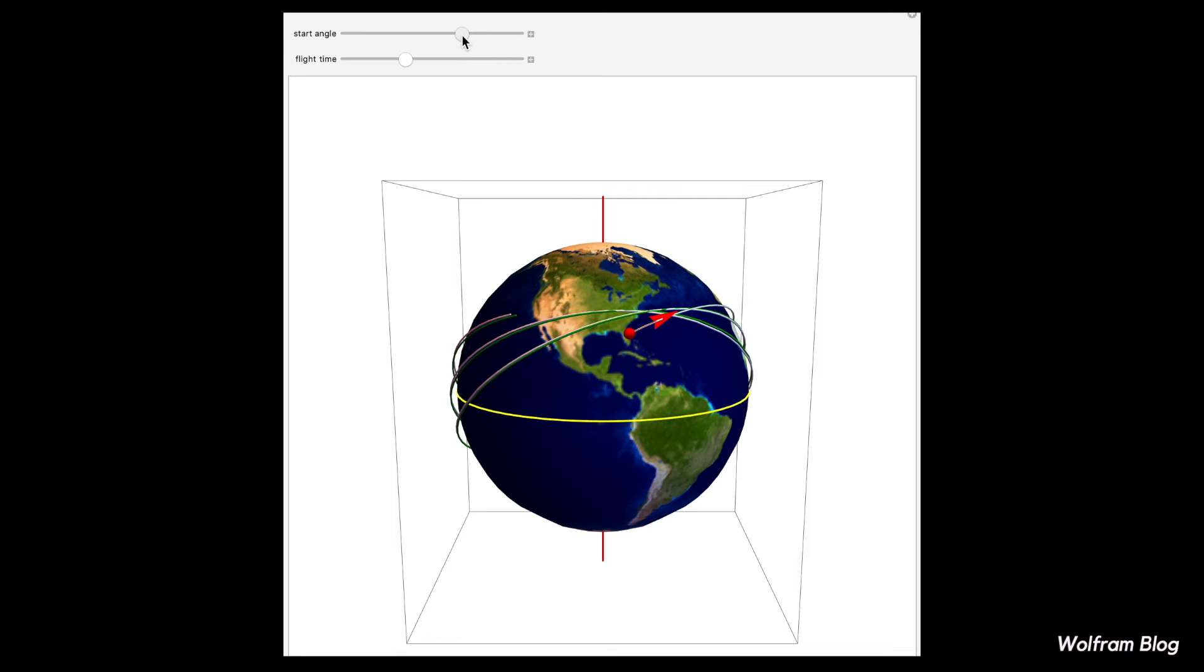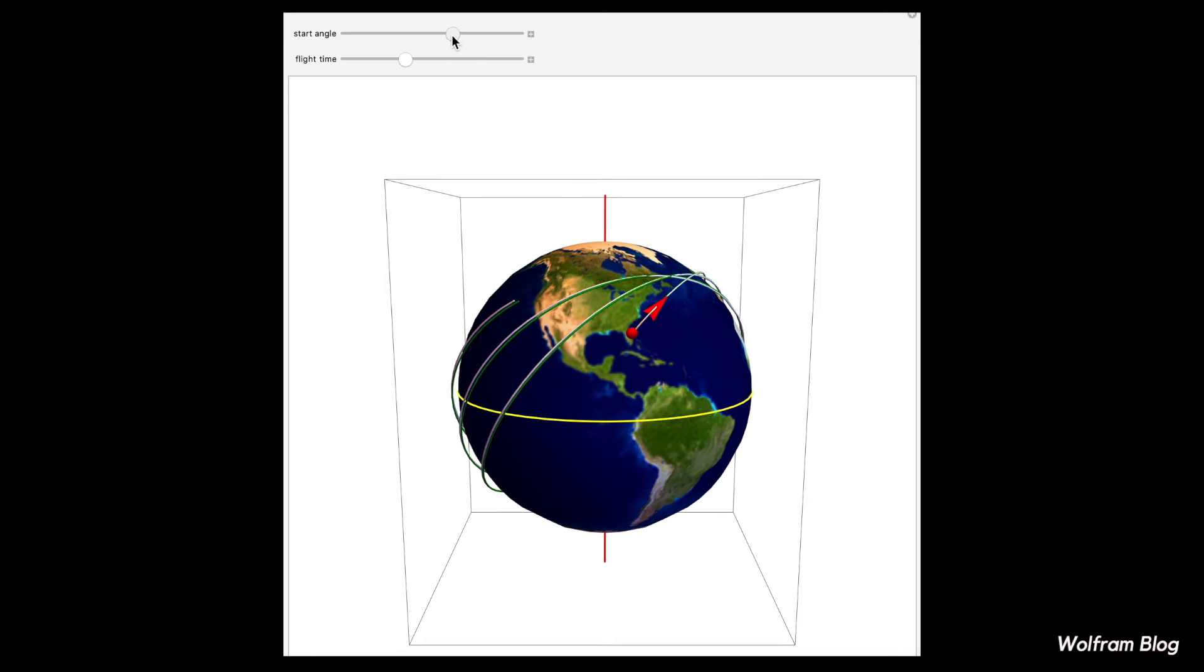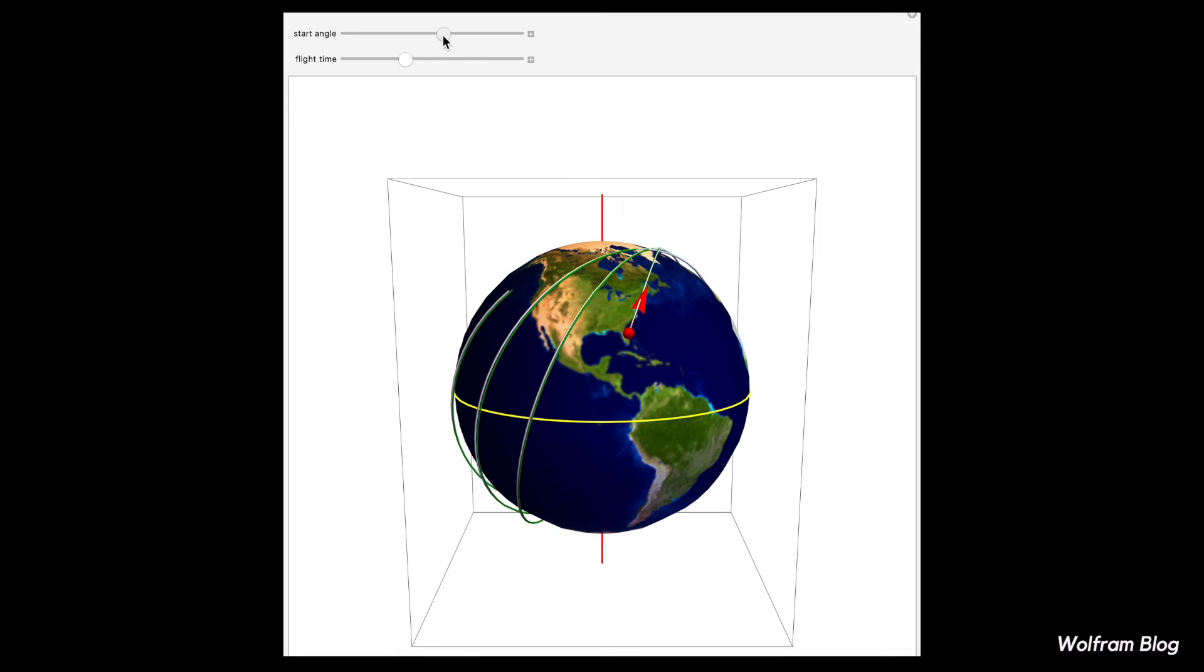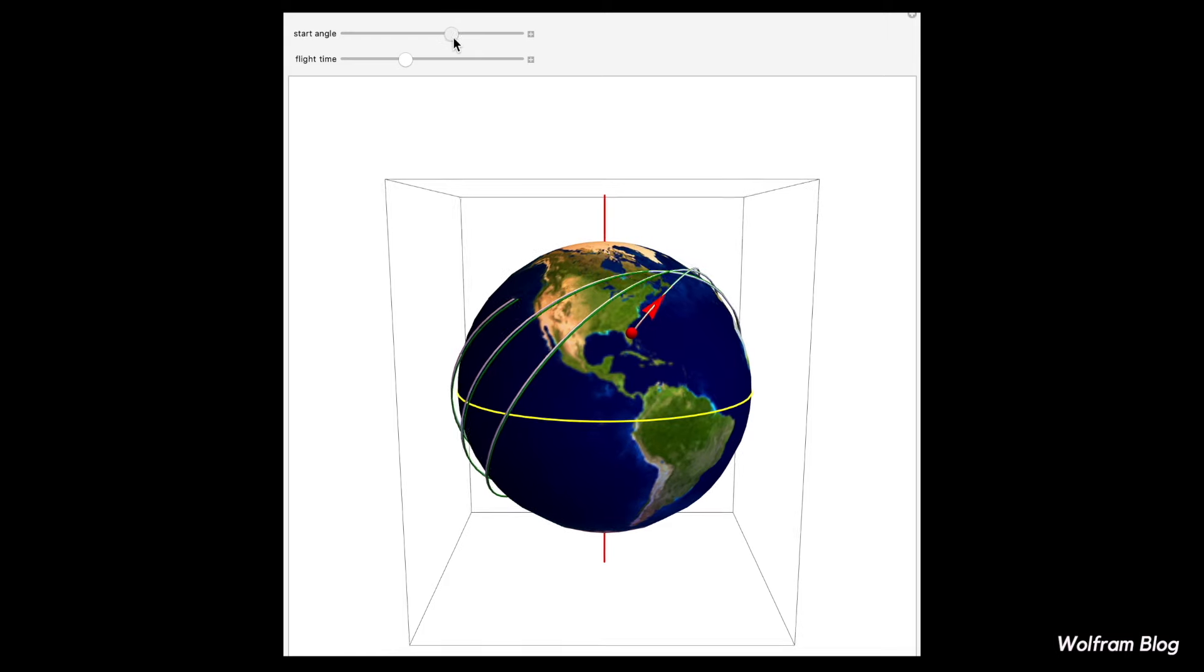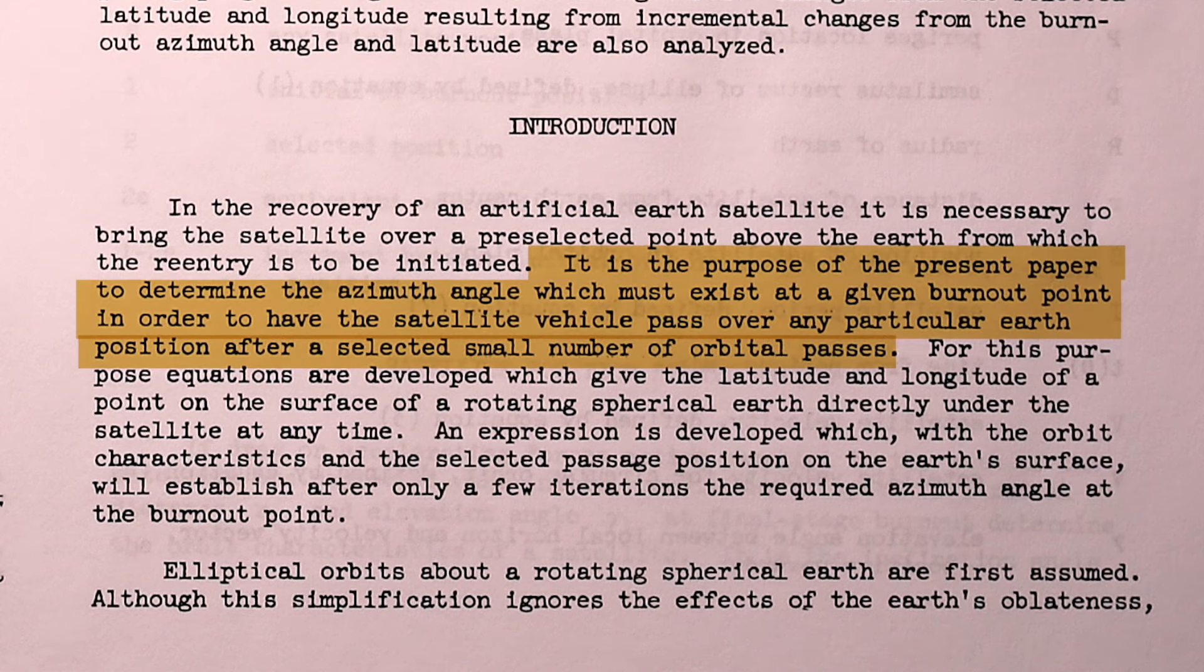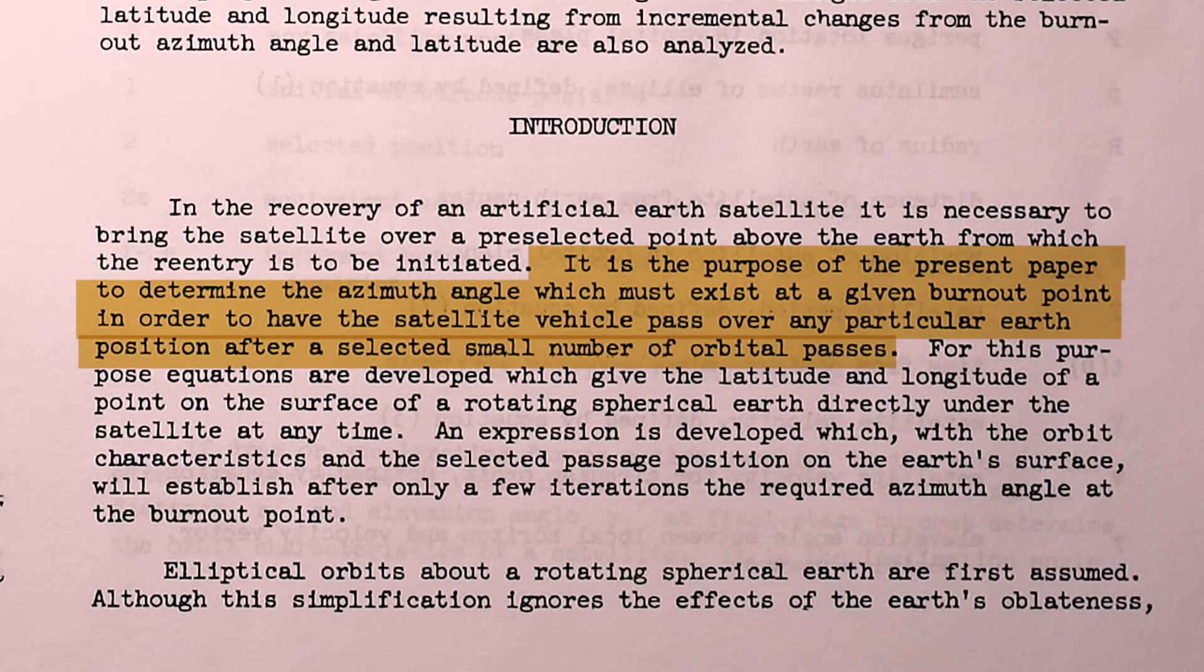Because the azimuth angle at launch will affect where the satellite is going to end up after a certain number of orbits, this paper is trying to find out what launch azimuth angle you would need in order to end up at a selected earth position after a set number of orbits.